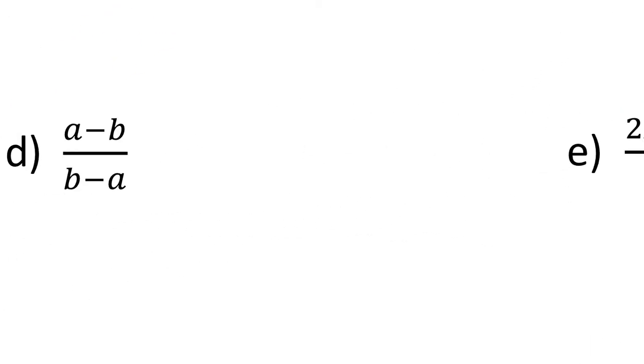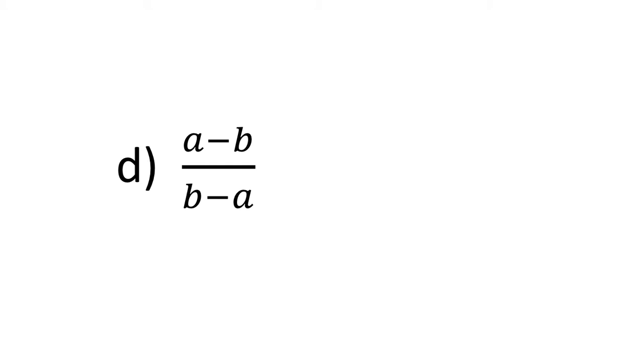Okay next one, part D. Bit of a strange one, tricky example this one. I'm going to leave the top line as A minus B. Bottom line what I'm going to do is I'm going to factorize out a minus 1. So it's minus 1 times (A minus B). Just check that: minus 1 times A gives you minus A, minus 1 times minus B gives you positive B, so that does work. And now we can cancel A minus B on top and bottom, leaving you with just 1 over minus 1 which is the same as minus 1.